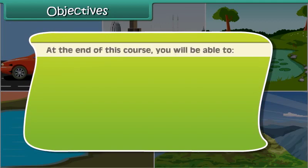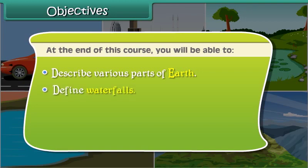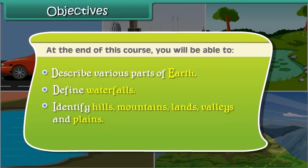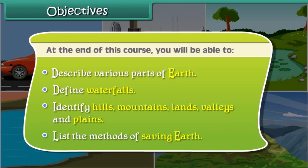At the end of this course, you will be able to: describe various parts of Earth, define waterfalls, identify hills, mountains, lands, valleys and plains, and list various methods to save our Earth.